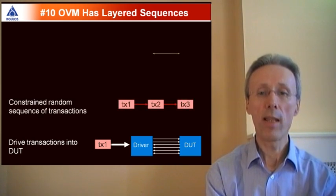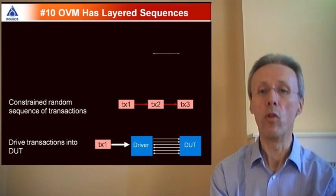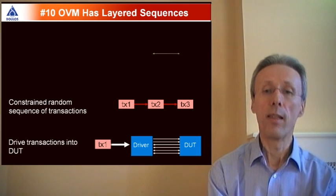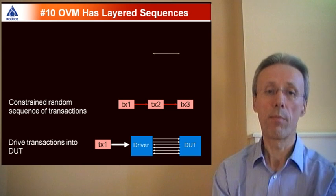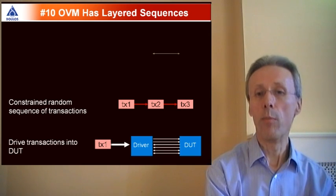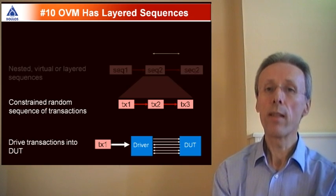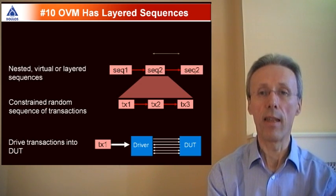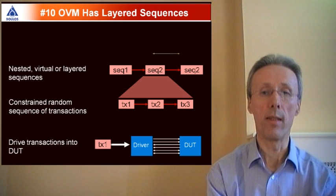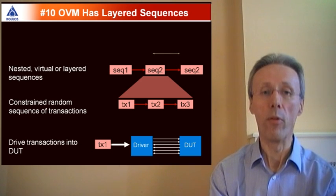A set of transactions can be collected together to form a sequence. The sequence of transactions can be fixed, or it can be randomized and constrained. Sequences themselves can be collected together to form higher-level sequences, and that can be done in a number of different ways.